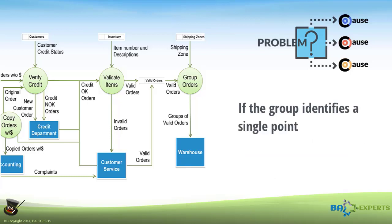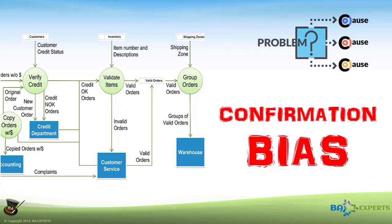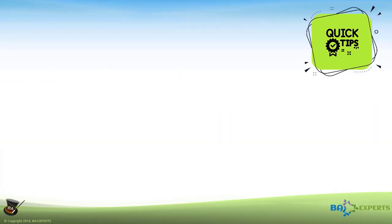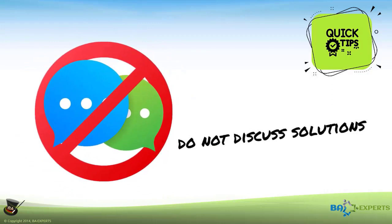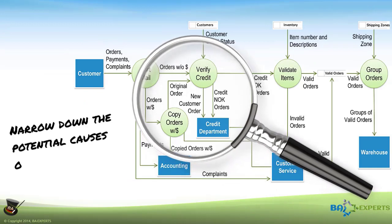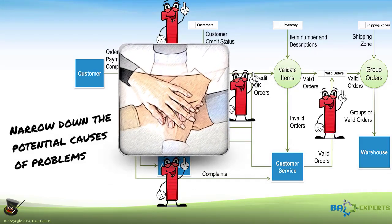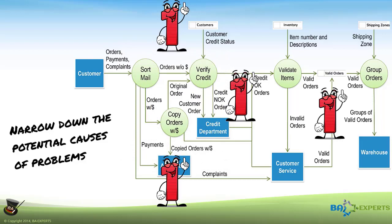If the group identifies a single point as the initial cause, they might have found the golden nugget. However, beware of confirmation bias and make sure to challenge them to verify it's not fool's gold. Another piece of advice: don't allow the group to discuss solutions during this exercise — make them stick to it. Emphasize this in the ground rules for this type of meeting. The purpose of problem analysis is to narrow down the potential causes of problems, not to solve them. Once the group agrees on all potential causes, someone might have to dig deeper to figure out where the problems really are — inside a process, a flow, or a data store. Only once you confirm the cause can you find solutions and discuss how to best eliminate them.